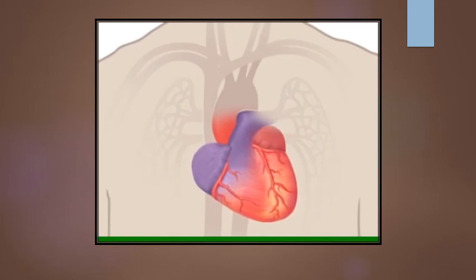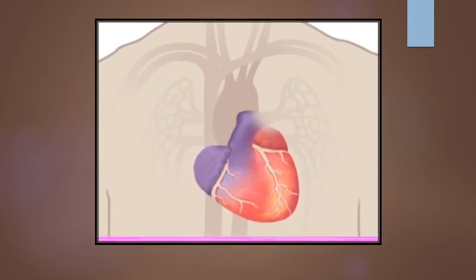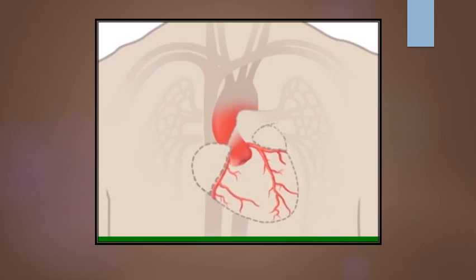Your heart is nourished by blood too. Blood vessels, called coronary arteries, extend over the surface of your heart and branch into smaller capillaries. Here you can see just the network of blood vessels that feed your heart with oxygen rich blood.